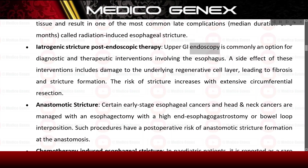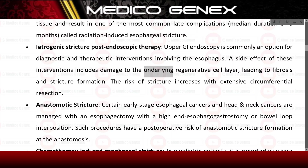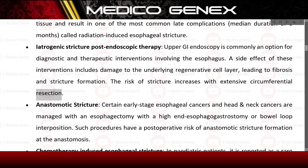Iatrogenic stricture / post-endoscopic therapy: upper GI endoscopy is commonly used for diagnostic and therapeutic interventions involving the esophagus. A side effect of these interventions includes damage to the underlying regenerative cell layer, leading to fibrosis and stricture formation. The risk of stricture increases with extensive circumferential resection.